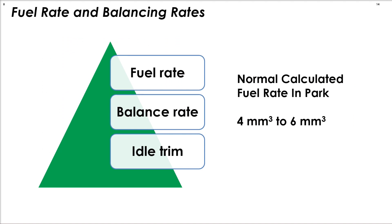Before looking at the balance rates, be sure to look at the fuel rate. The fuel rate is the amount of base fuel being supplied to each cylinder to maintain a specific idle RPM. Normal values in park would be from four cubic millimeters to six cubic millimeters. If this number is too large, then a problem is already identified — one or more injectors are likely returning too much fuel.